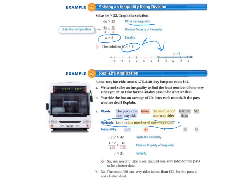So our inequality is going to be $1.75, that's the price of a one-way ride, times R, that's the number of one-way rides. We don't know how many that takes yet. So $1.75 is more than, so greater than, 42. So we're going to write that inequality.